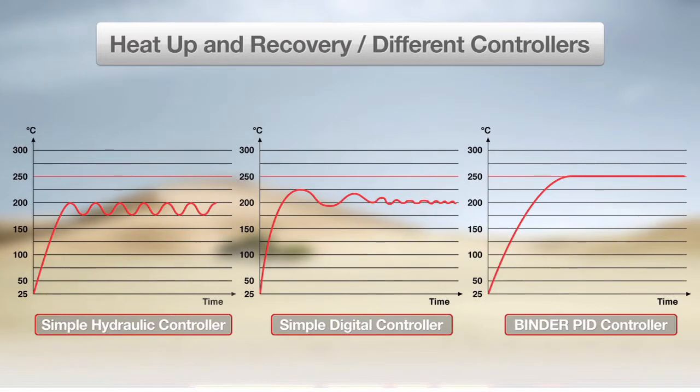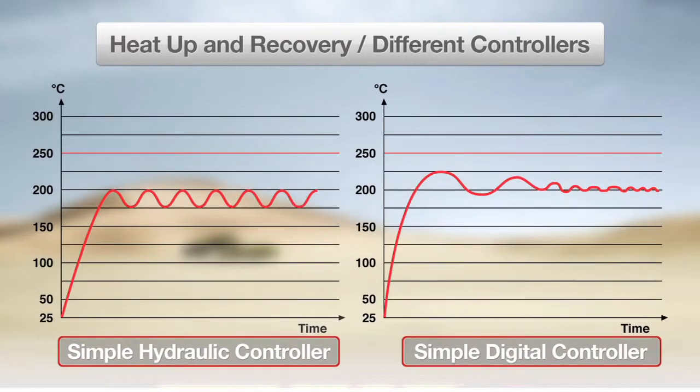For the ovens with simple hydraulic and digital controllers, you can see that while the time to heat-up is relatively fast, neither oven accurately reaches the set temperature and the uniformity after heat-up is low.